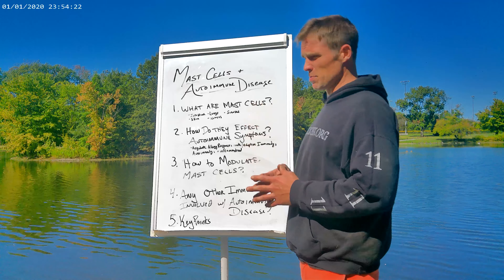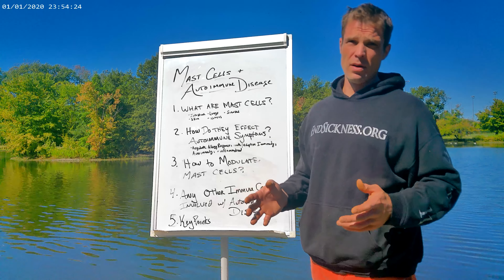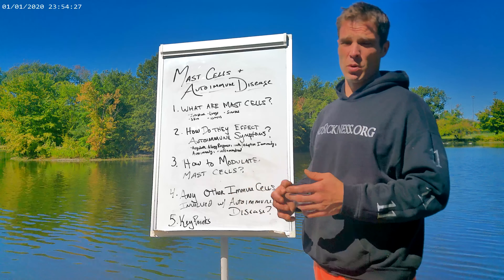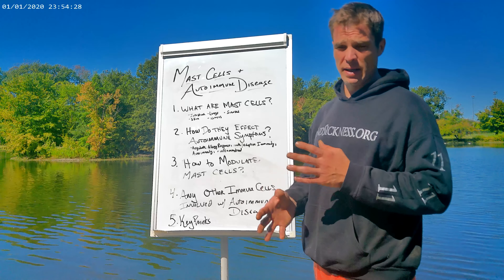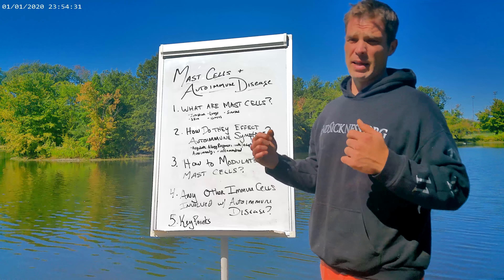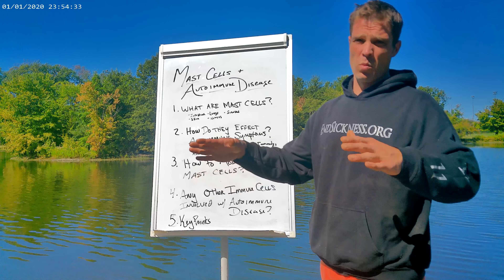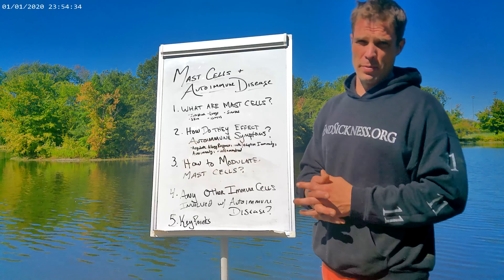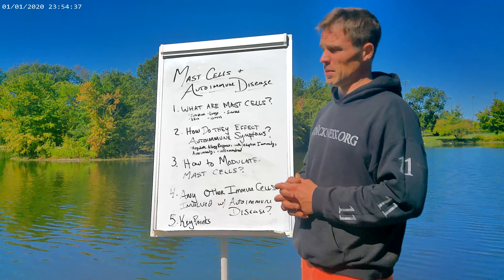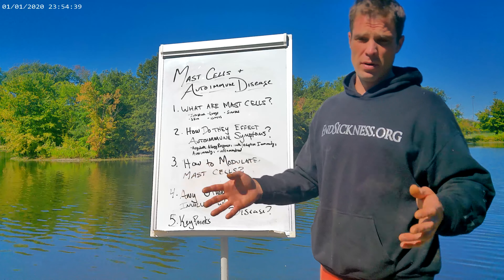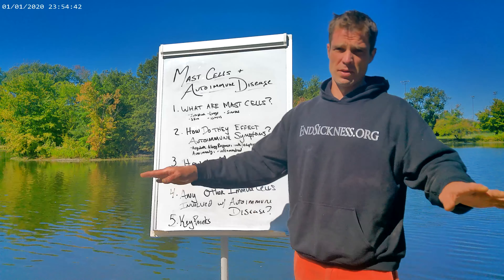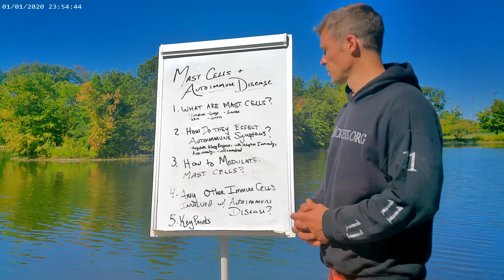What are mast cells? Mast cells are a type of white blood cell known as an effector cell. What they do is they send out inflammatory mediators like cytokines, chemokines, and histamine that influence other immune cells and tell them what duties to perform. The mast cells are the head honcho, telling all the other immune cells what to do — they're the ones in charge.